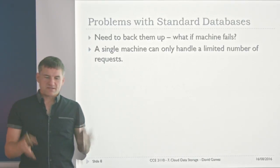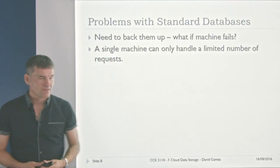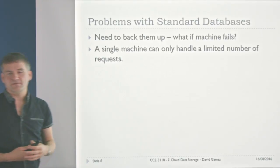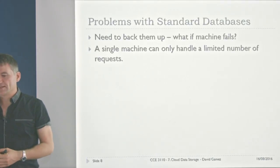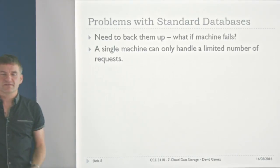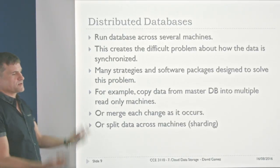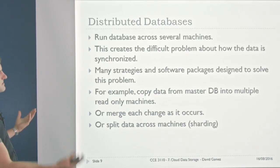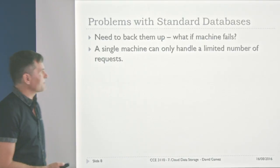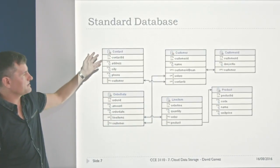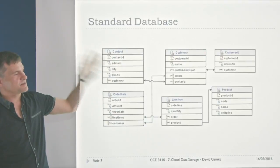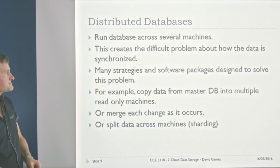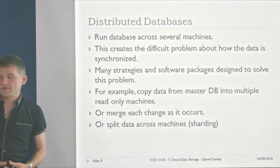A standard database is software running on a single machine, listening on a port, changing data on a hard drive. But there are obvious limitations: what if the machine dies, or the hard drive fails? A single machine can only handle a limited number of requests, so if we're trying to run an internet-scale application, one single machine is not going to handle millions of queries per second. This led people to the idea of a distributed database, running across lots of different machines — but then you've got the problem of how to synchronize the data.